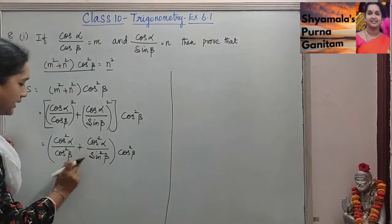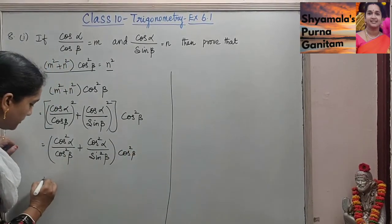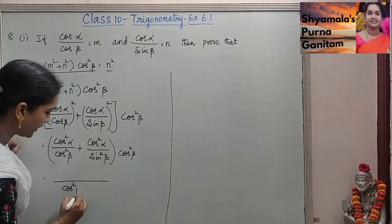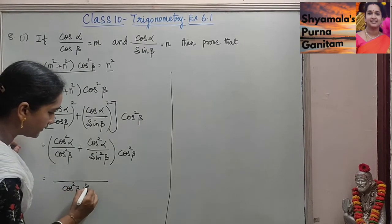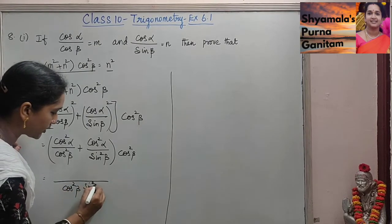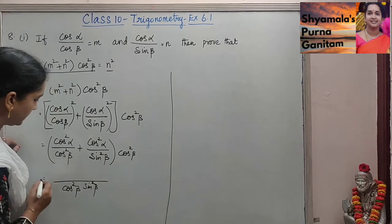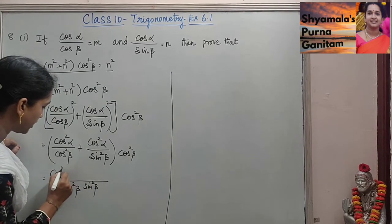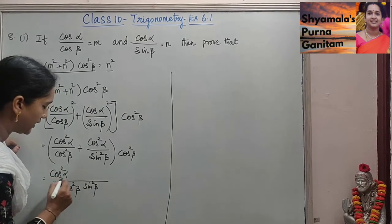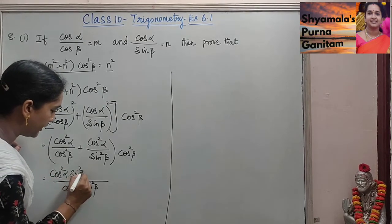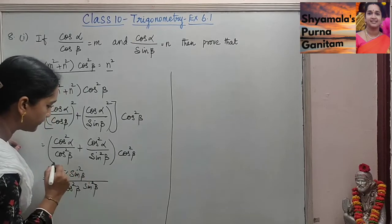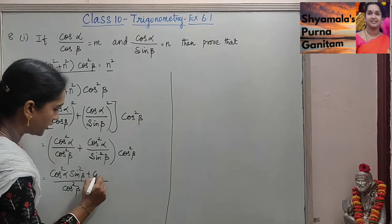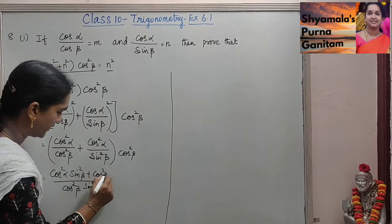Now we will take LCM for these two terms. The LCM will be cos squared β sin squared β. So the numerator will be cos squared α into sin squared β plus cos squared β.